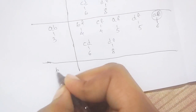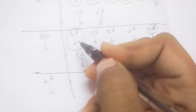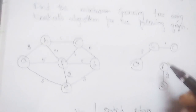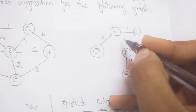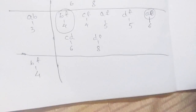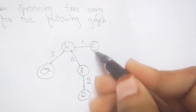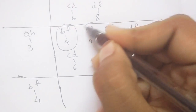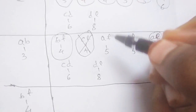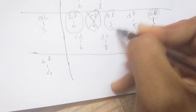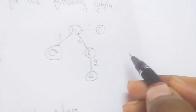Next, take out BF with weight 4 and construct the graph with B and F connected. Now check CF: connecting CF forms a cycle, so exclude it. Check AF: connecting AF also forms a cycle, so exclude it as well.